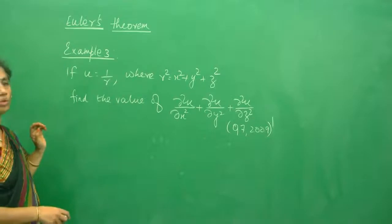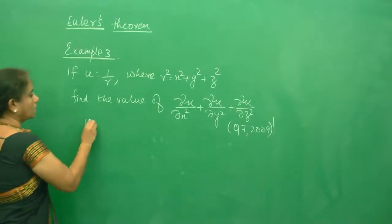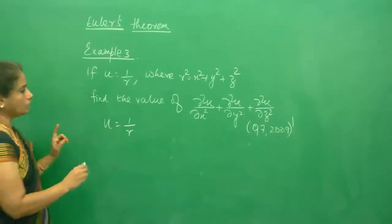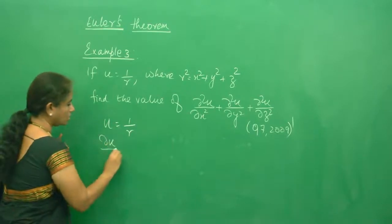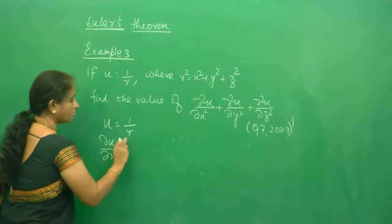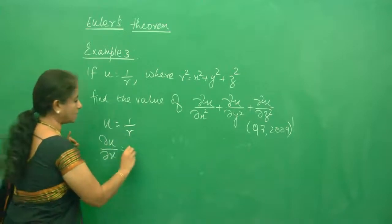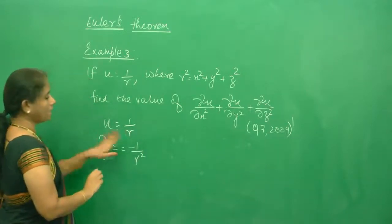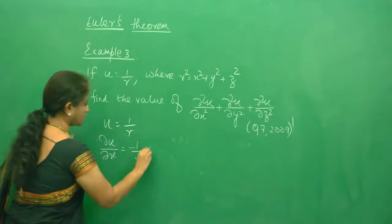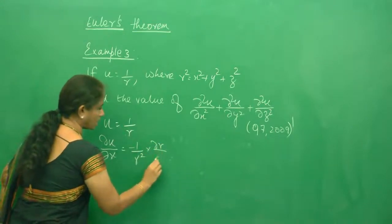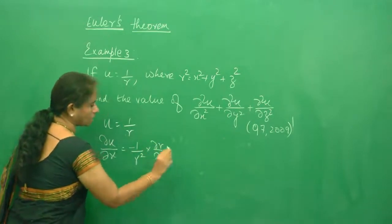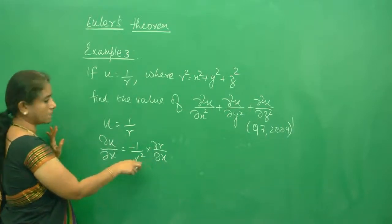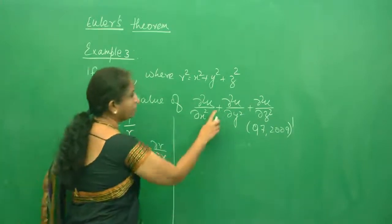Let me find ∂u/∂x to start with. You know u = 1/r, so ∂u/∂x will be: first differentiate with respect to r, which is -1/r², and then by chain rule you get ∂r/∂x. Now I want to find out what ∂r/∂x is and then substitute it here.